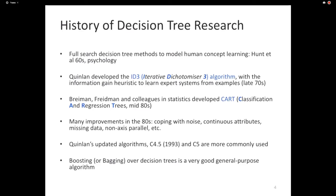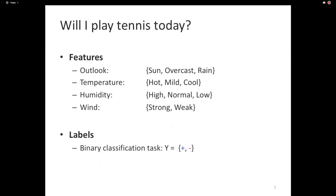Rather than presenting the algorithm directly, I'm going to use a running example for the entirety of this lecture. This example comes from Quinlan's paper and is definitely in Tom Mitchell's textbook. It involves deciding whether I should play tennis today or not. We're going to use a decision tree to help make that decision, with four features: outlook (sunny, overcast, or rain), temperature (hot, mild, or cool), humidity, and wind. The label is a binary plus or minus — yes or no. This is supervised machine learning.